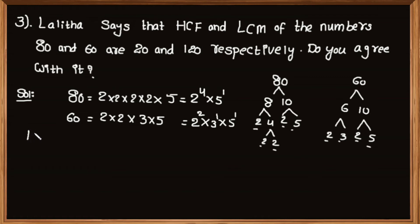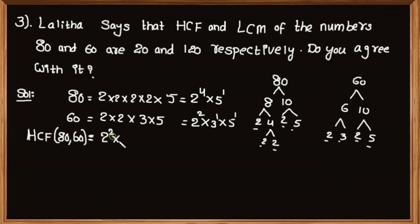Here 2 and 5 are common prime factors. The product of smallest powers of common prime factors is known as HCF. Here 2 squared and 5 to the power 1 are the smallest powers of common prime factors 2 and 5. So HCF of 80 and 60 is equal to 2 squared multiplied by 5 to the power 1, that is equal to 4 multiplied by 5, which equals 20.